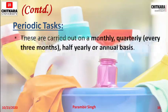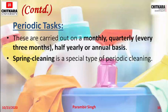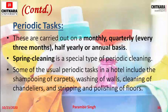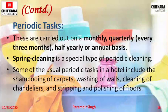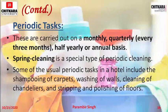Periodic tasks are carried out on a monthly, quarterly, half-yearly, or annual basis. Spring cleaning is a special type of periodic cleaning. Some usual periodic tasks in a hotel include the shampooing of carpets, washing of walls, cleaning of chandeliers, and stripping and polishing of floors. These tasks are carried out at various interval levels depending on the hotel, the property, and the amount of guests.